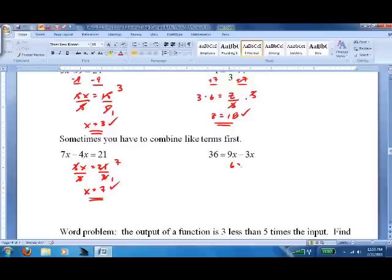9x minus 3x is 6x. Divide by 6. Divide by 6. Cancel. Cancel. X equals 6. 9 times 6 is 54. 3 times 6 is 18. I'm not trusting my brain on that. So I'm going to go 54 minus 18 in my calculator off to the side is 36. Beautiful.